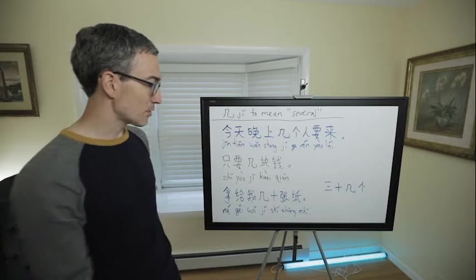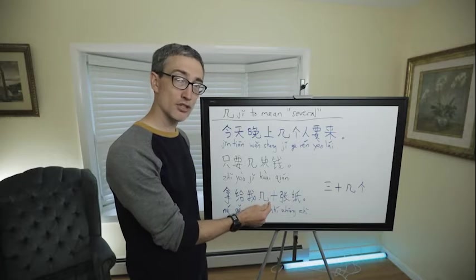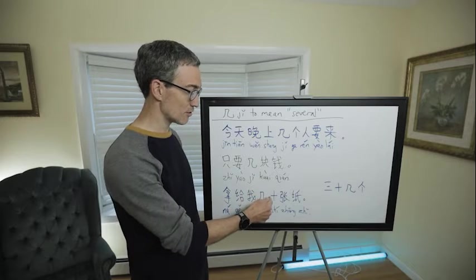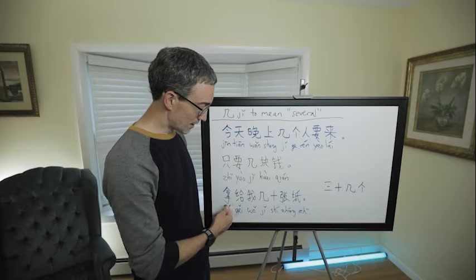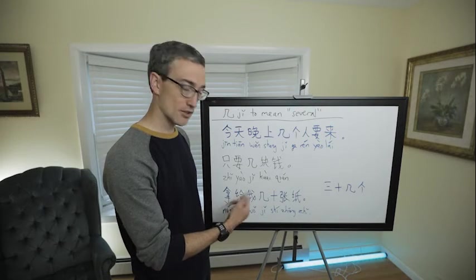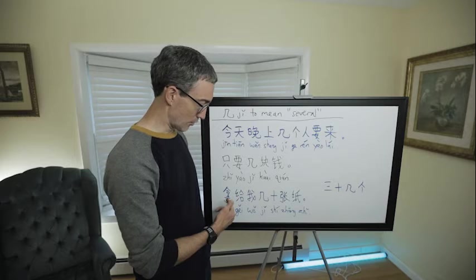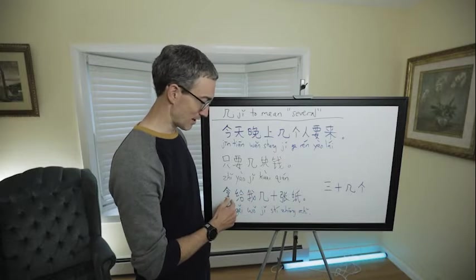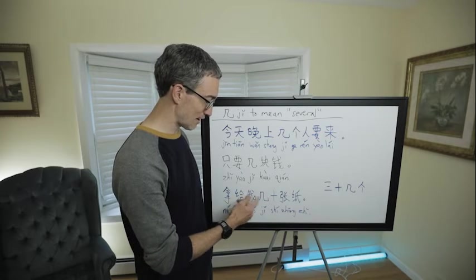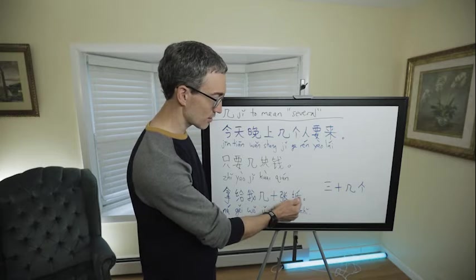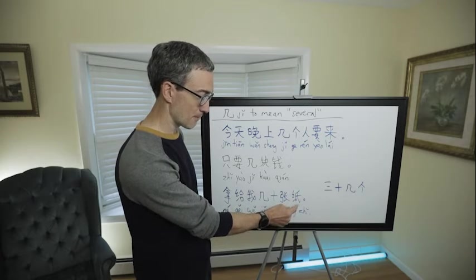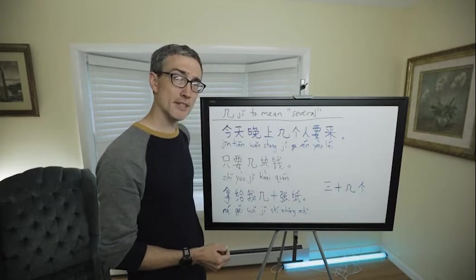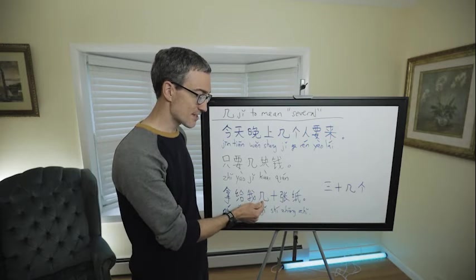Now this one will show you that the placement of the 几 in a larger number kind of changes the meaning. It still means several, but here it means several tens. 给我几十张纸 (gěi wǒ jǐ shí zhāng zhǐ) - give to me, or get for me, or bring to me, get for me. 几十张纸 - so 纸 is paper, 张 is a measure word for flat things, remember that? So 几十, what do you think that means?